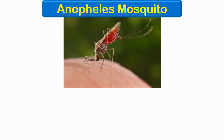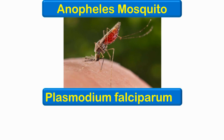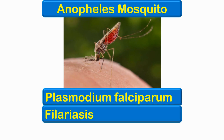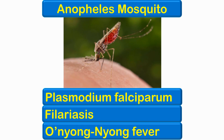The Anopheles mosquito can be identified by the angle its body forms against the horizontal while sitting. It is responsible for the transmission of the most dangerous form of malaria, Plasmodium falciparum. It can also transmit filariasis and O'nyong-nyong fever.